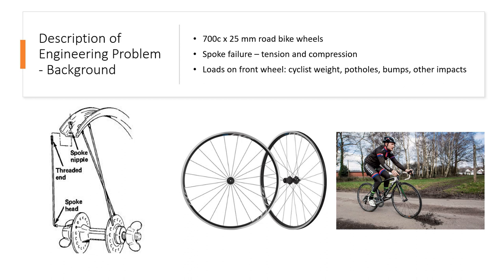Typically these spokes are loaded with around 100 kilograms of force, which is just shy of 1000 newtons in tension. There are two main ways that spokes can fail: tension and compression. They can fail under tension when constructed improperly — for example, if whoever is building the wheel puts too much tension on the spoke and it snaps. They can also fail in compression; impacts, potholes, bumps, and cyclist weight can cause a spoke to buckle and snap. For this analysis, we'll be examining the latter — how impacts from bumps and potholes affect a bicycle wheel.